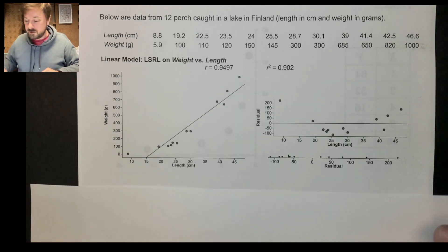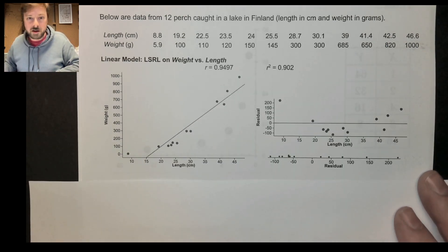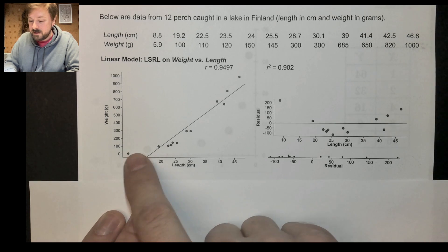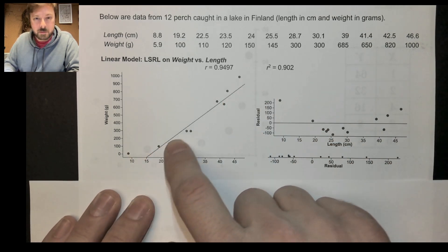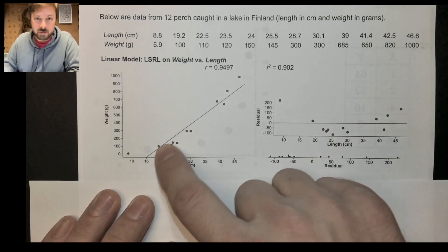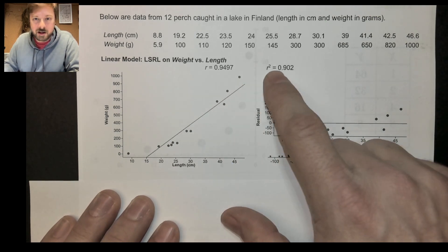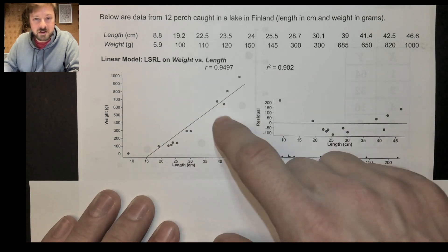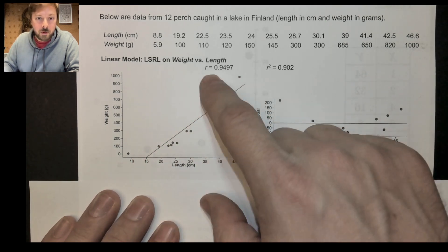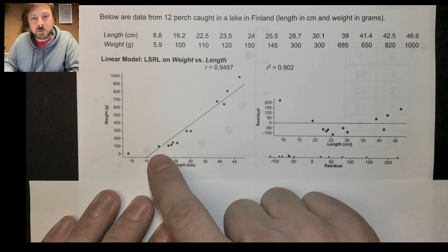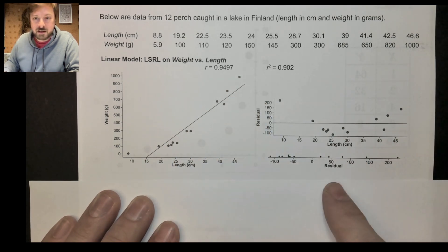Let's start off with a linear model. We've thrown it into some software and here we see a scatter plot of that relationship, and here we have a line of best fit. If I look at R, that's pretty gosh darn strong. And R squared is humongous. 90.2% of the variation that exists in the weights of these fish is explained by the least squares regression line.